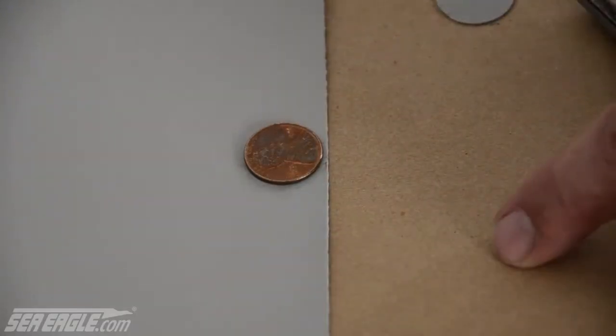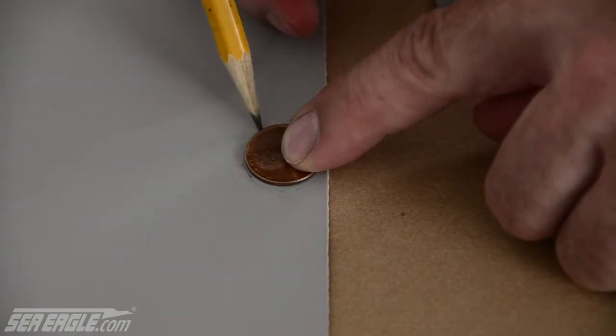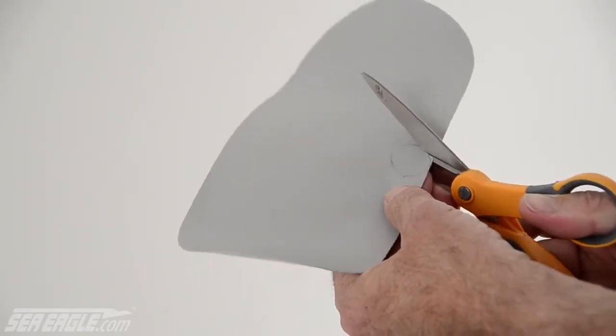For a small hole such as this, trace the outline of a penny onto the patch material and cut out the patch with a pair of scissors.